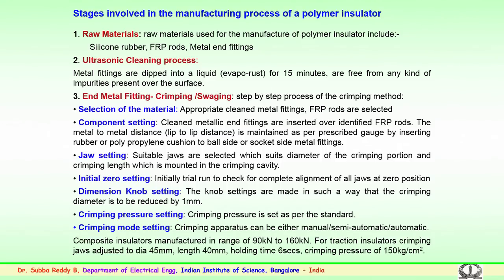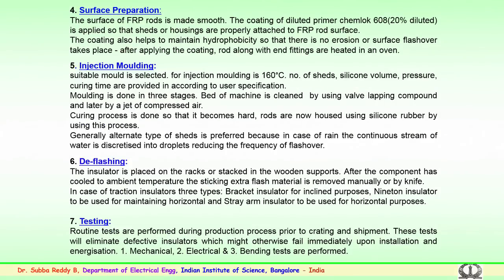Various settings are done for crimping — from initial conditions to crimping pressure, crimping mode, and crimping knob settings — at proper pressures as per standards for a particular fiberglass rod dimension. Crimping mode settings can be manual, semi-automatic, or automatic. Composite insulators presently manufactured range from 90 kN to 160 kN. For traction insulation, crimping jaws are adjusted to a diameter of 45 mm, length of 40 mm, for 6 seconds at a crimping pressure of around 150 kg per centimeter.